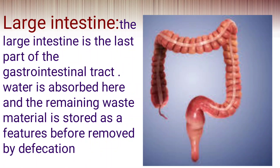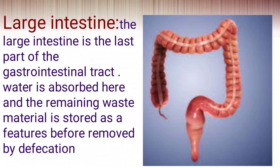The large intestine collects undigested and waste materials from the small intestine. It absorbs remaining water and salts, and temporarily stores the waste material. Later it is sent to the rectum, which is a chamber where fecal matter is stored. Feces is the waste material after digestion. Finally, it is expelled through the anus. This completes the full picture of the human digestive system.